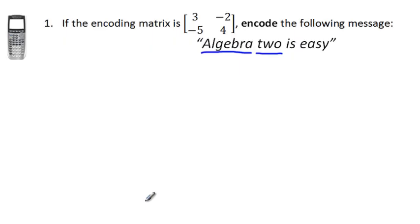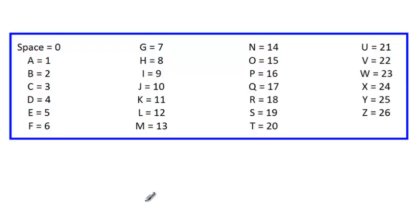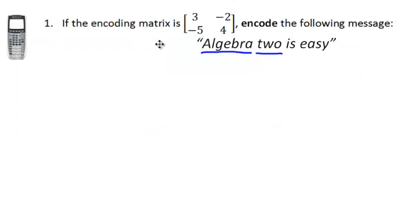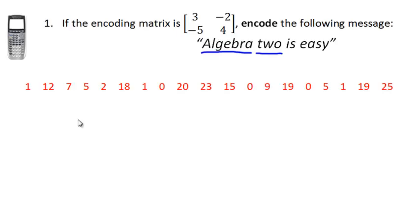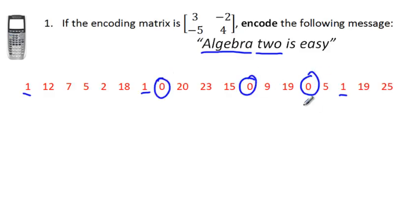On the back page of your notes there's a reference to help you transfer letters to numbers. The numbers for 'Algebra 2' are already prepared. Notice there are three A's in the phrase, and there should be three 1's in those corresponding spots — and there they are. Remember, zeros represent spaces. All these numbers represent 'Algebra 2 is easy.'